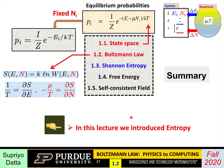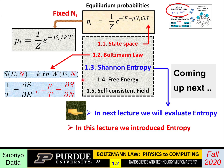To sum up: in this lecture we justified the Boltzmann law. In the first lecture we introduced it; in this second lecture we justified it. In the process, we introduced the concept of entropy, which is related to the number of states of the reservoir. In the next lecture, we'll evaluate and justify the properties of entropy. Thank you.